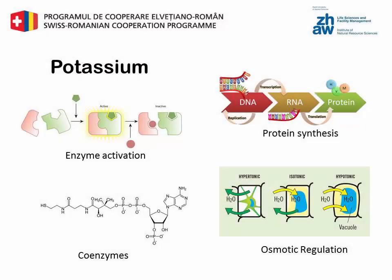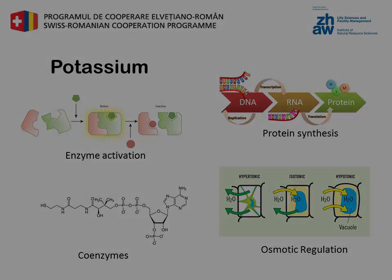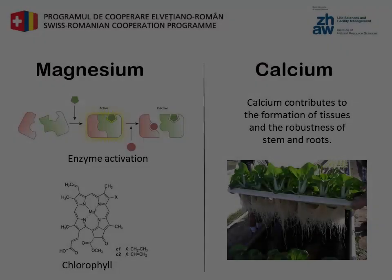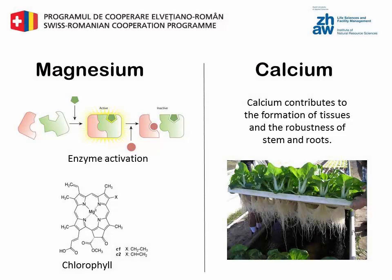Potassium functions as an enzyme activator and regulator of the photosynthetic and protein synthesis processes. Magnesium is important as a constituent of the chlorophyll and as an enzyme activator. Calcium contributes to the formation of the tissues and to the robustness of the plant stem and roots.